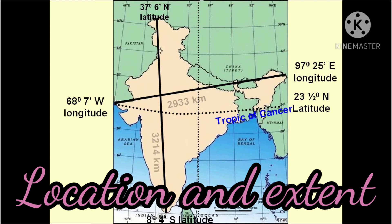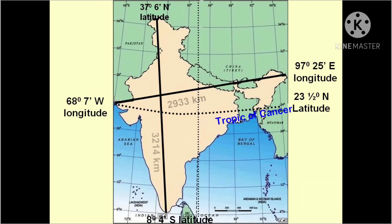Location and Extent: India lies in the northern and the eastern hemisphere of the globe. The mainland of India extends from about 8 degrees 4 minutes north to 37 degrees 6 minutes north latitudes, and from 68 degrees 7 minutes east to 97 degrees 25 minutes east longitudes. Thus, its latitudinal and longitudinal extent is about 30 degrees.